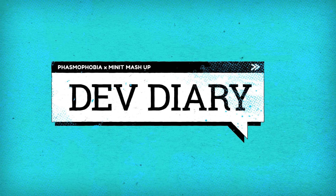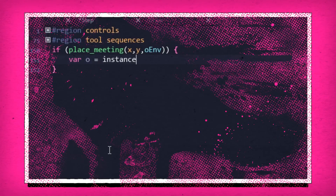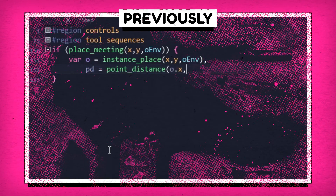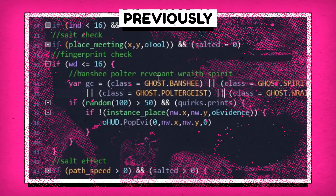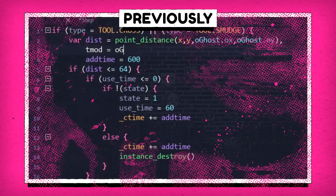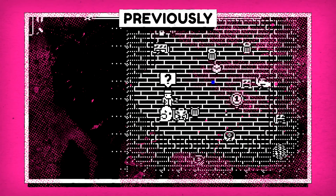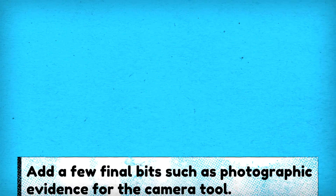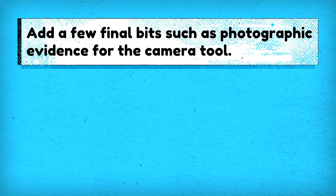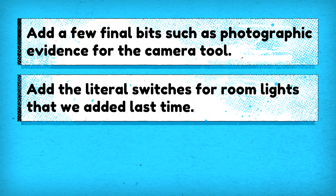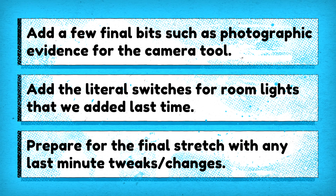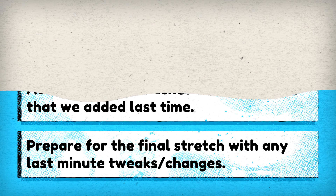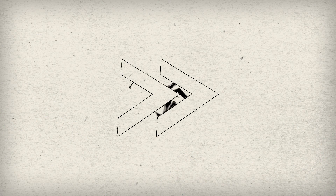Ladies and gentlemen, welcome back to Dev Diary, where we're continuing to work on our Phasmophobia across Minute Mashup. Last time we added interactive environmental objects, tweaked the existing code, and began adding restrictions to match evidence to their proper ghost types. Today's plan continues that ambition — we'll be adding a few final bits like picture evidence for the camera, controls for room lights, and any last minute tweaks to ready us for what could be the final episode in this series. So let's not waste any more time and get to the coding.